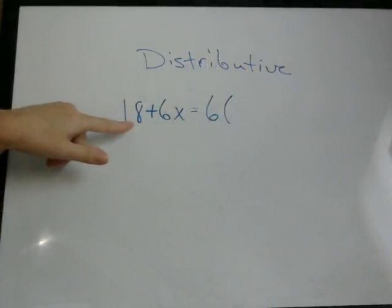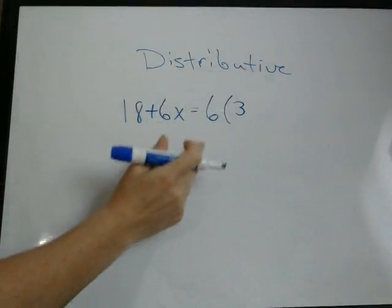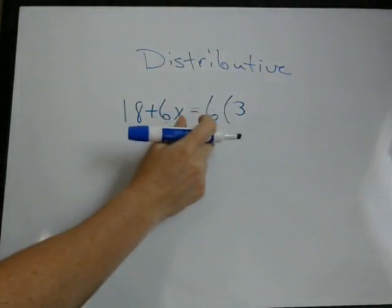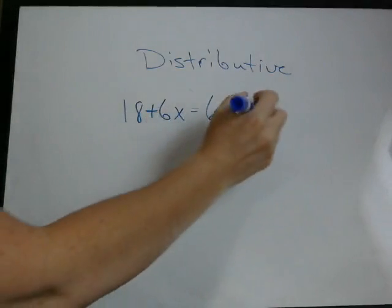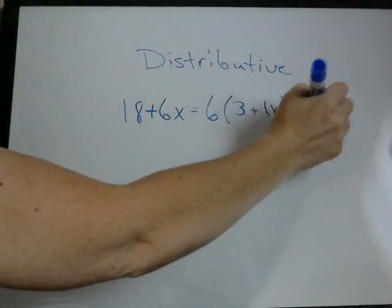And the way mathematically you do it is 18 divided by 6 is 3 because we want to know what times 6 is going to give us 18. Or 18 divided by 6 gives us that answer. 6 divided by 6 is 1. Instead of writing 1x, we can just write that as x.